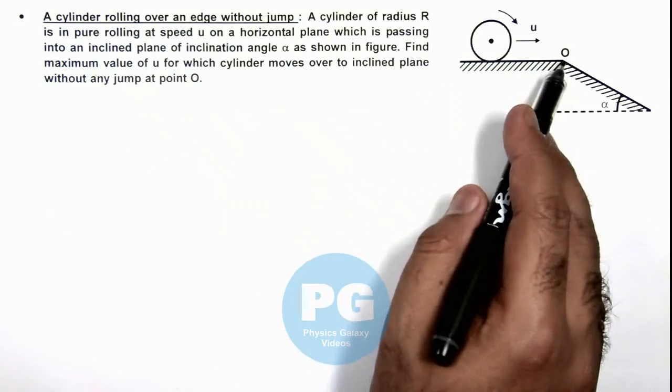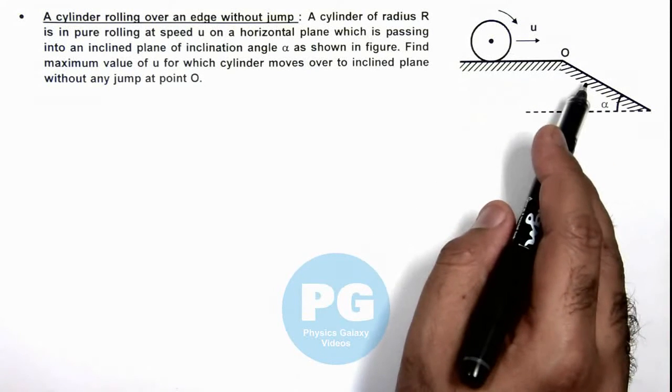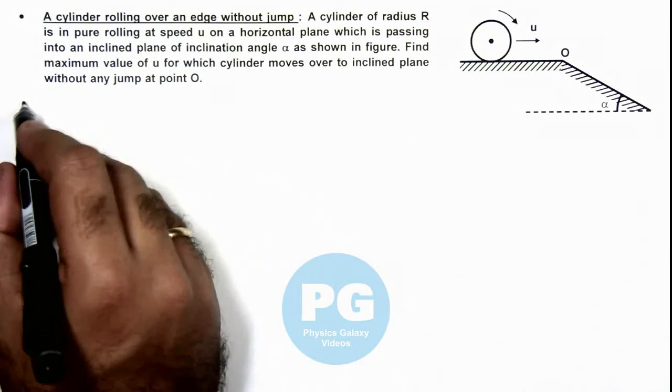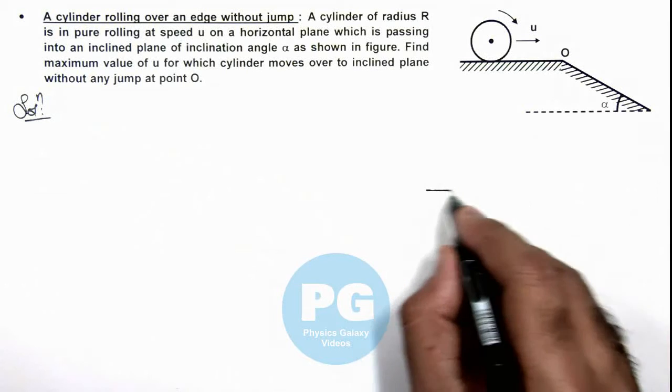For which the cylinder moves over to the inclined plane without any jump at point O, that means it will not break off from point O when it is transiting from horizontal plane to inclined plane. So here we can analyze the situation first by redrawing the figure.